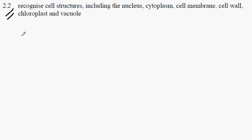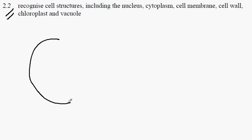2.2 edXL GCSE Biology. All living things are composed of cells. A cell has a cell membrane,